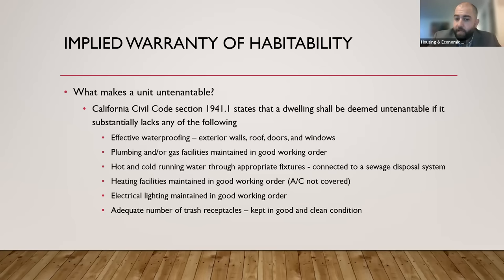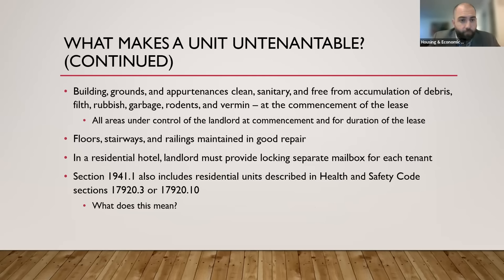Electrical lighting needs to be maintained in good working order — your residence needs to have lights built in and working. There must be an adequate number of trash receptacles outside your unit, kept clean and in good condition. The building, grounds, and appurtenances need to be clean, sanitary, and free from accumulation of debris, filth, rubbish, garbage, rodents, and vermin at the start of the lease.